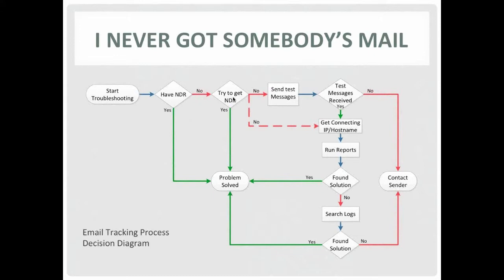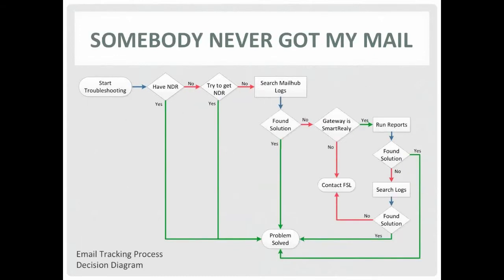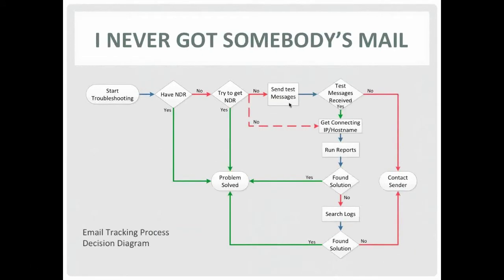If there's no NDR, I recommend most people starting out to have the sender of the original message send test messages to the original recipient, to your external mailbox, and to the unfiltered address. If the test message doesn't show up anywhere, the problem is not with your mail system — the message is not leaving the sender's site. There's no way to troubleshoot further until you contact the sender. Contacting the sender's postmaster is usually a waste of time; what I normally suggest is having your user contact the sender and ask them to tell their mail administrator so they can help find out why the message never left their site.